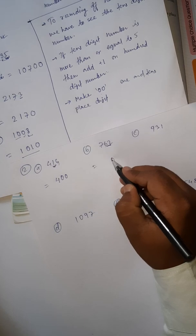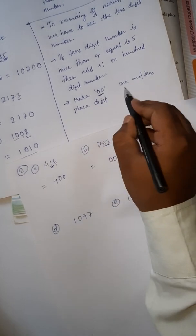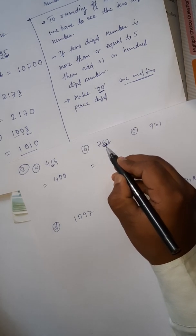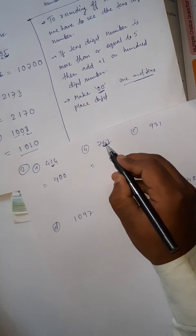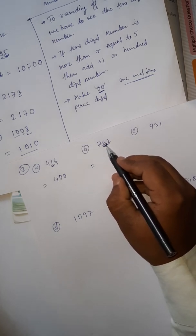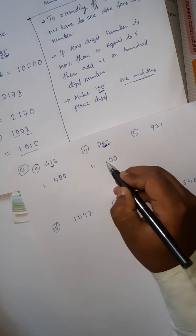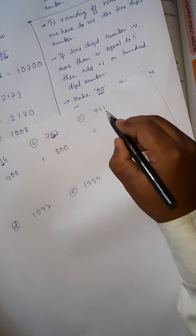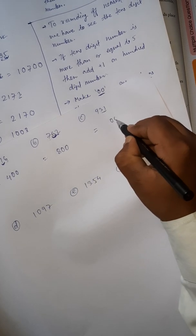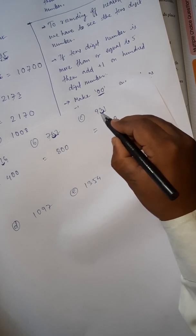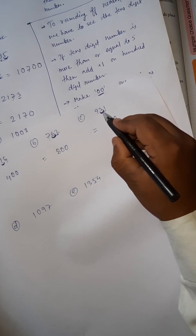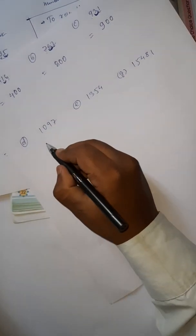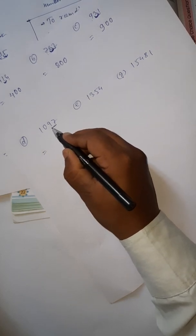For 762, make ones and tens zero first, then look at the tens digit, which is 6 — that is more than 5. So add 1 to the hundreds digit: 7 plus 1 is 8. Answer is 800. For 931, the tens digit is 3, which is less than five — so no addition. Answer is 900.